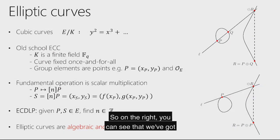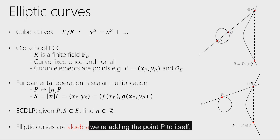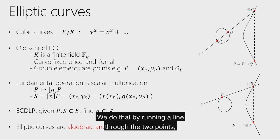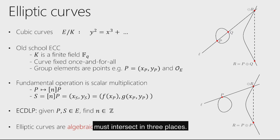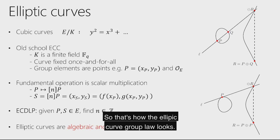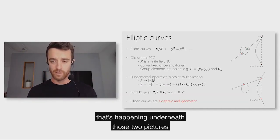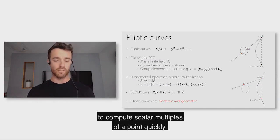The fundamental operation is encoding our secrets by taking a point on the elliptic curve and performing the group operation — adding the point to itself n times — via scalar multiplication. We can draw these geometric curves: in one picture we're adding point P to itself, in another we're adding two different points P and Q by running a line through them, finding the third intersection with the cubic curve, then negating the result by flipping the point over the x-axis to get the sum.